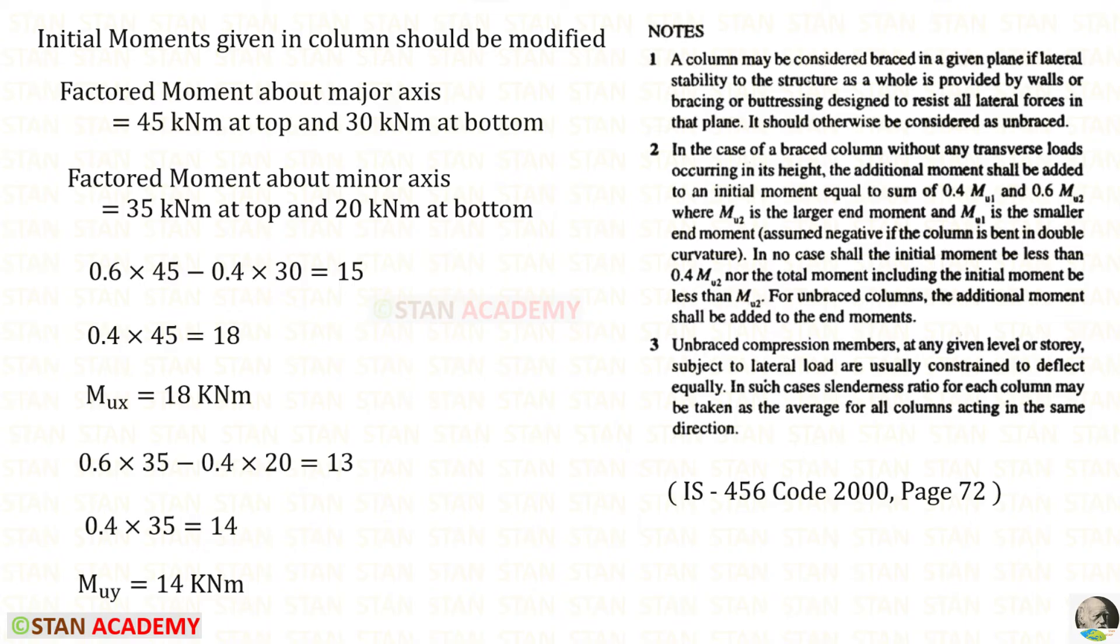In the similar way, we can do for the minor axis. We will get 13. Then we have to multiply MU2 with 0.4. We will get 14. We have to take the maximum value. 14 is maximum. So we have to take that.